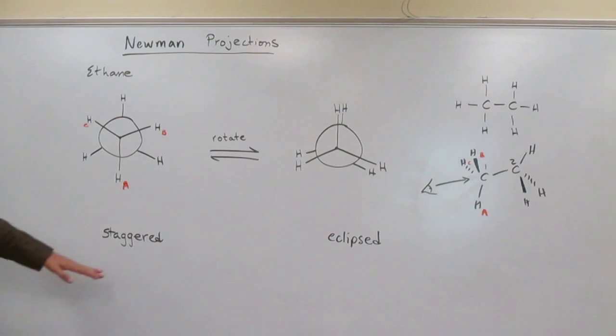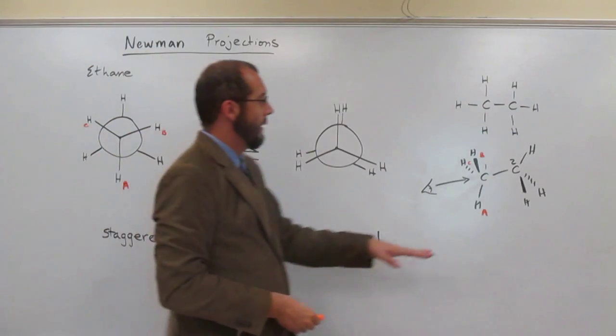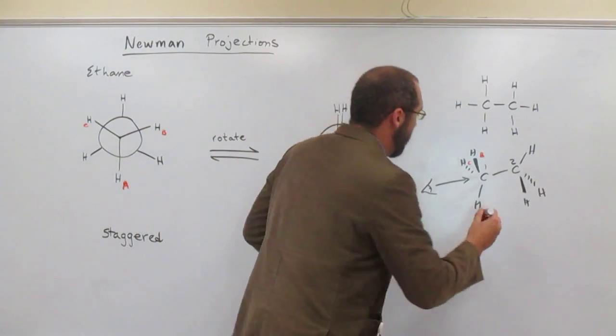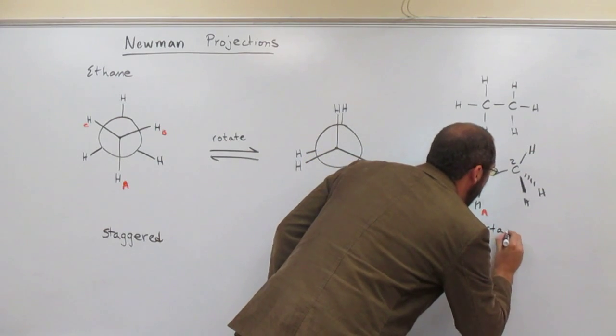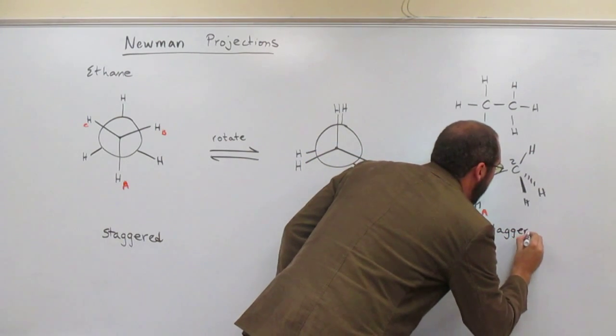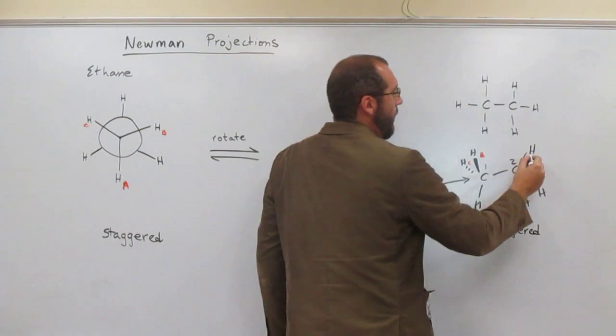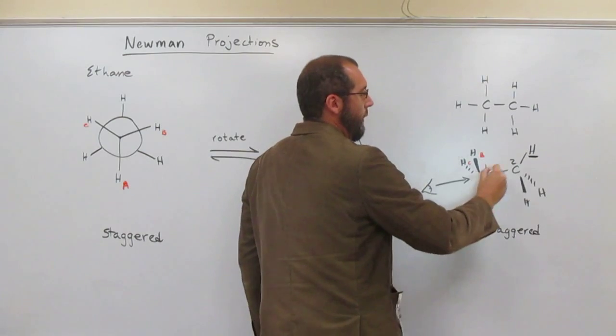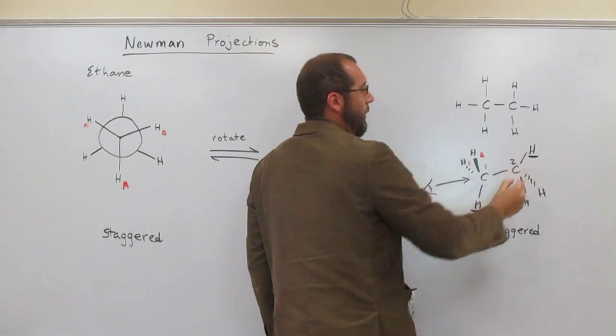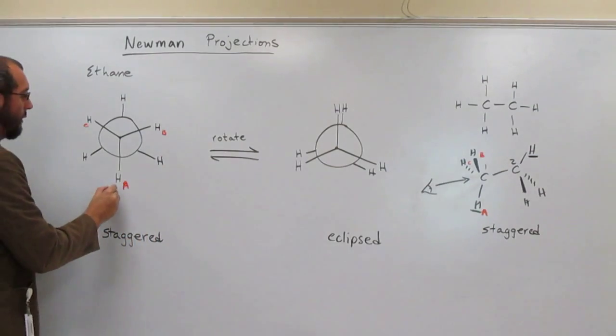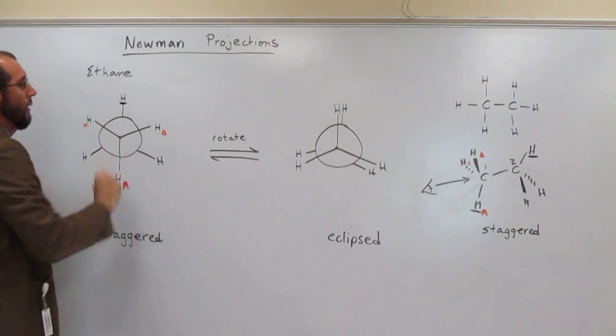Okay, so this is the staggered view. This is the staggered view. I don't know if you can tell. But look, the hydrogen is on the opposite side of the carbon chain as the other hydrogen in the plane. So this hydrogen and this hydrogen are in the same plane.